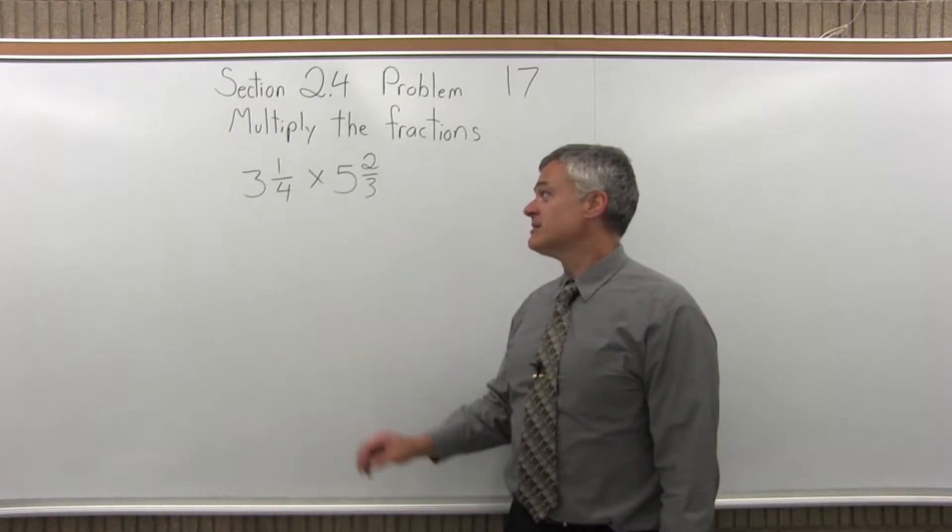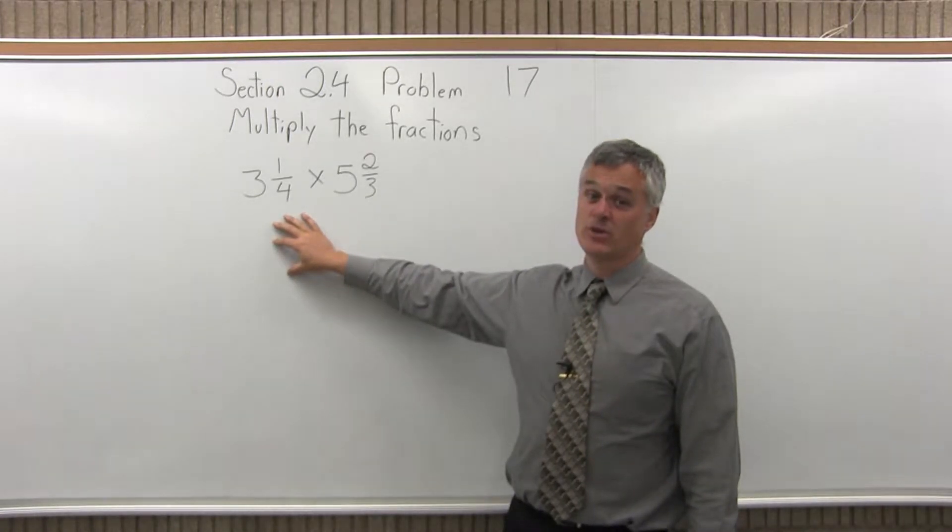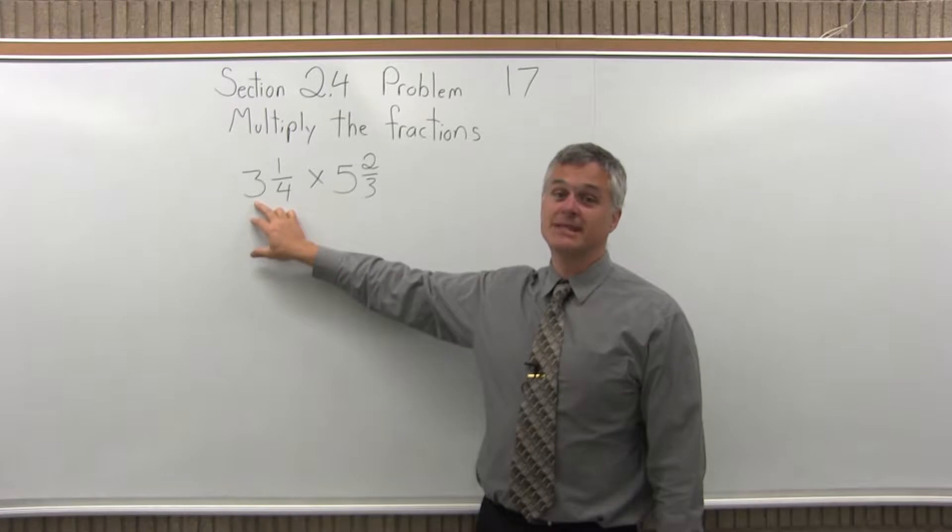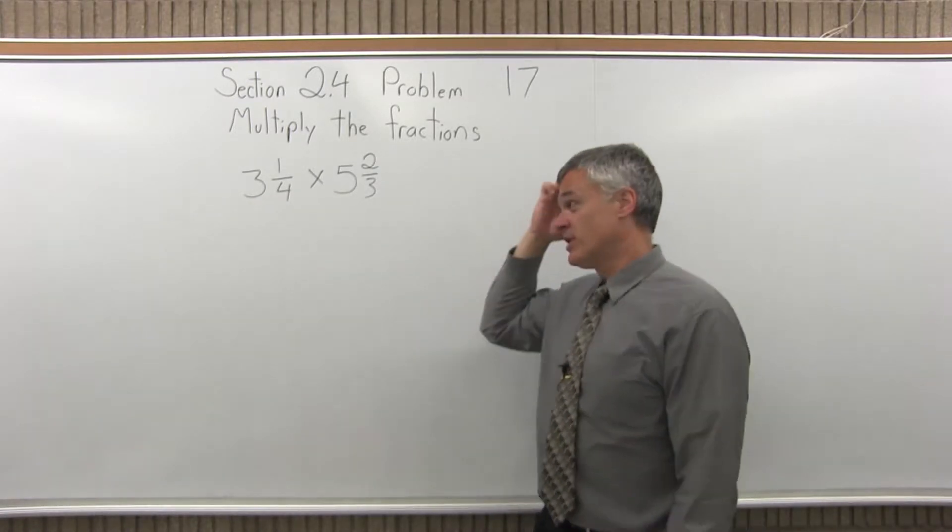So to multiply something like this, we need to write both fractions so they have only a numerator and a denominator. We can't have a mixed number like 3 and 1 fourth. We have to have only a numerator and a denominator.